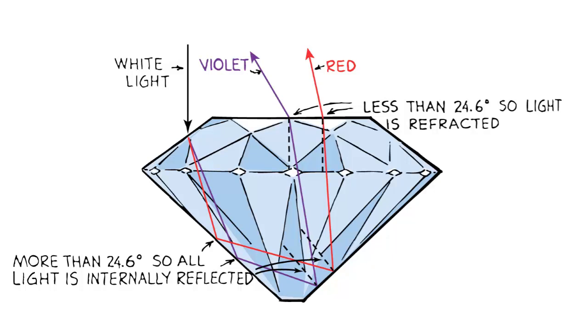Diamond's a pretty amazing material. It slows down light so much that the critical angle is only 24.6 degrees. It's actually very hard for light to leave a diamond. You can see that when white light comes in, between the refraction and reflection at all the different surfaces, you get quite a bit of dispersion. This can make diamonds look very beautiful.